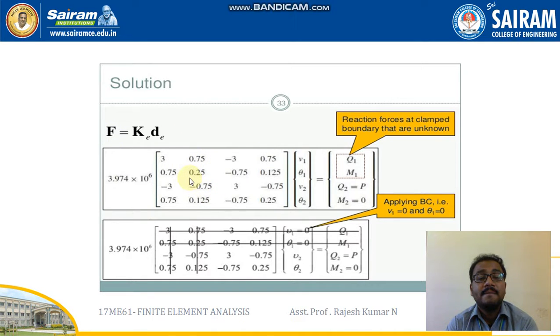Moving to the equilibrium condition, we'll be getting this and applying the boundary conditions. Since node 1 is fixed, that is v1 theta 1, I'll be using elimination approach method. I'll be eliminating first row first column, second row second column.